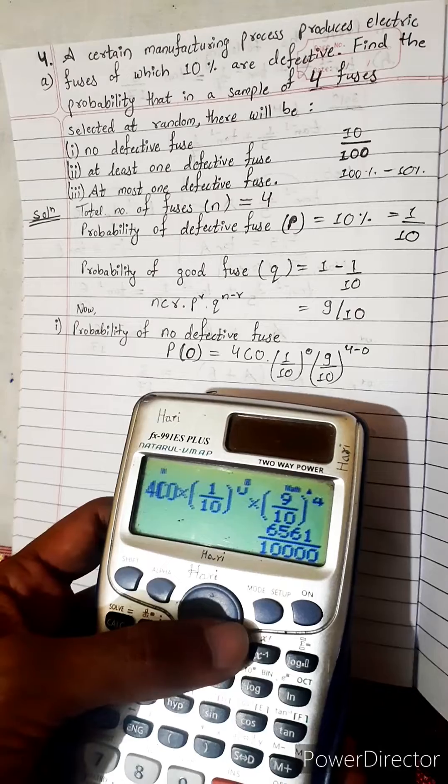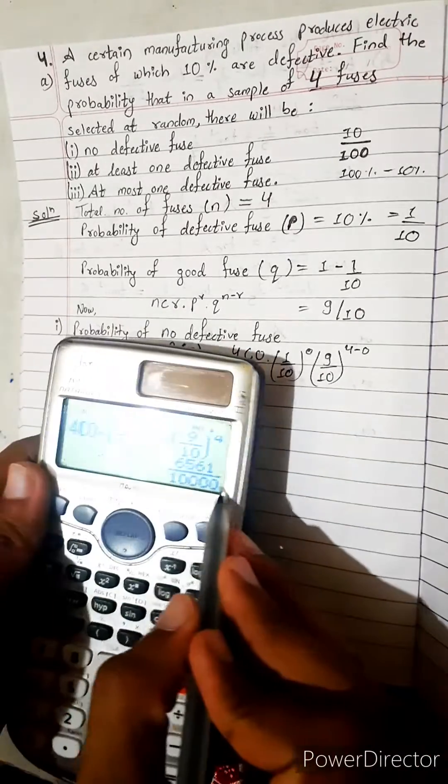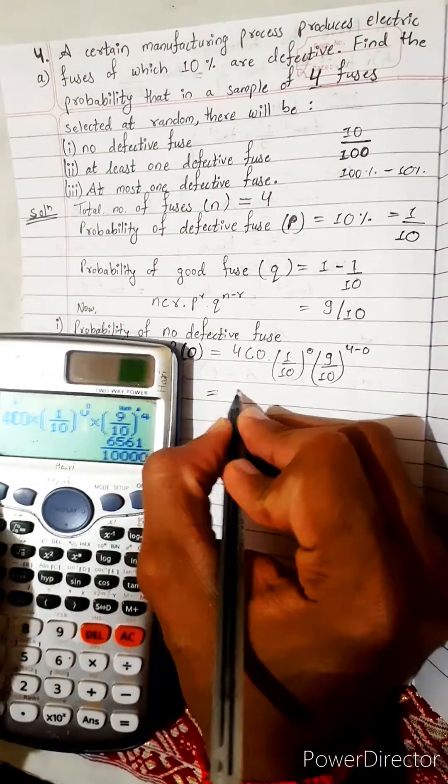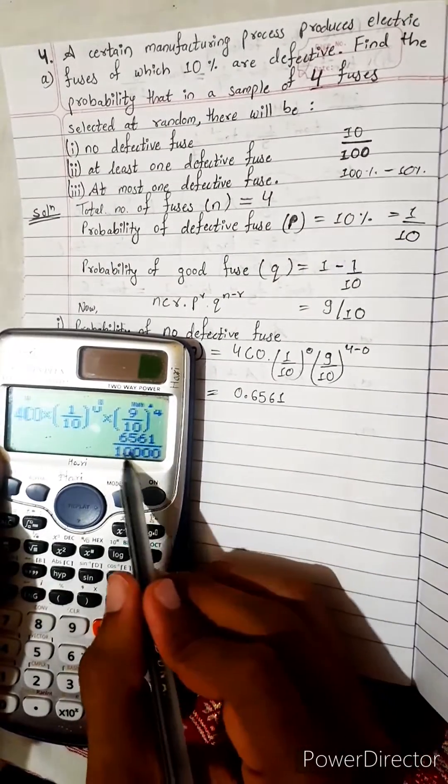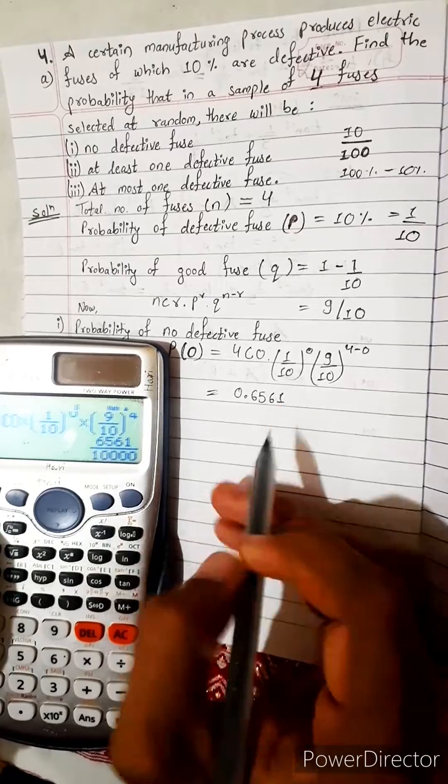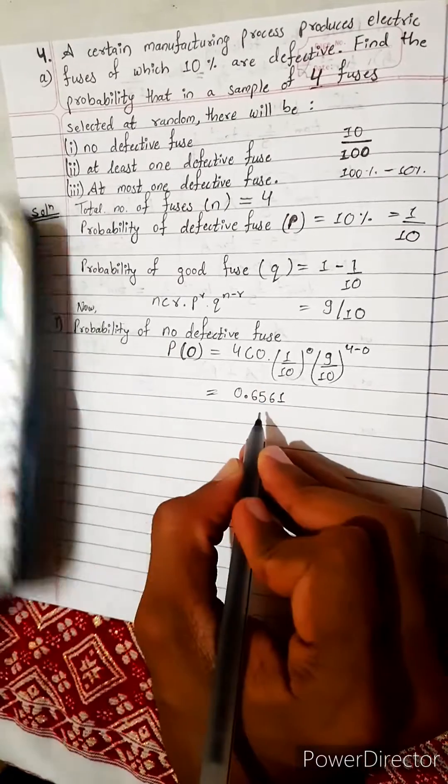Directly, it is 6561 divided by 10,000. This means shift that decimal to this side. It will be 0.6561. There are 4 zeros, so 4 digits eliminate and shift one decimal point here. So simple.